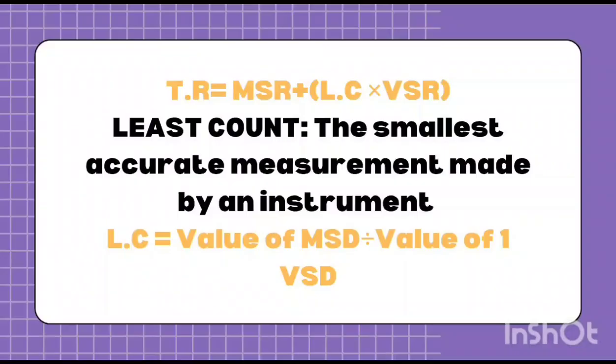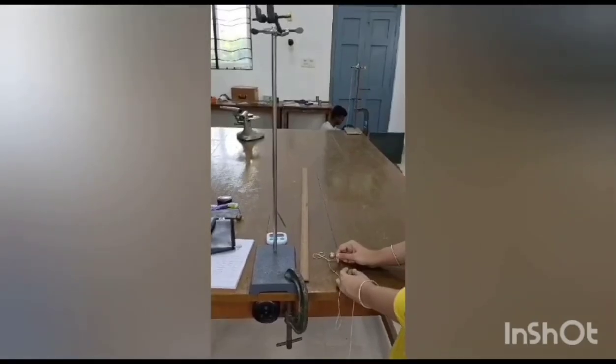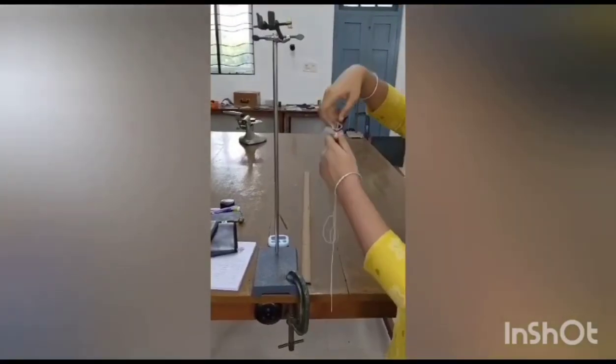Least count is the smallest accurate measurement made by an instrument. Least count equals value of 1 MSD divided by value of 1 VSD. Likewise we should also calculate the length of the hook.